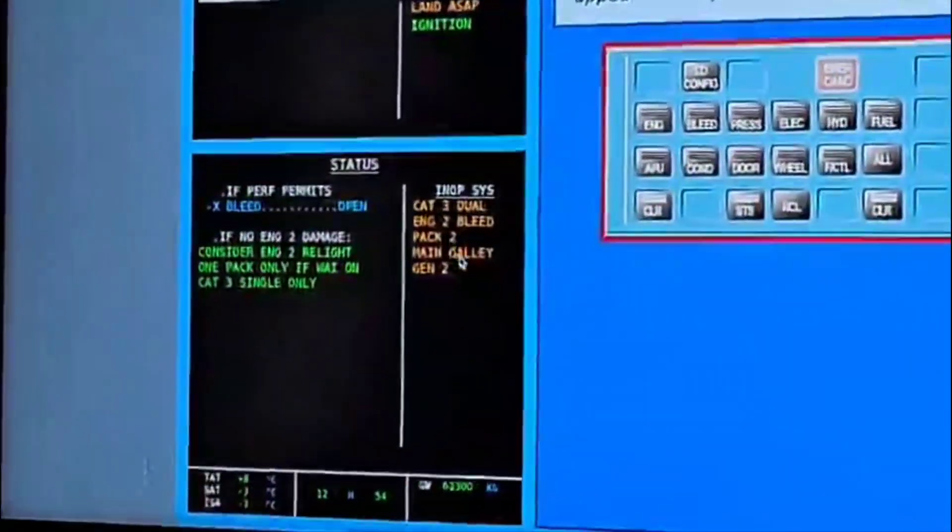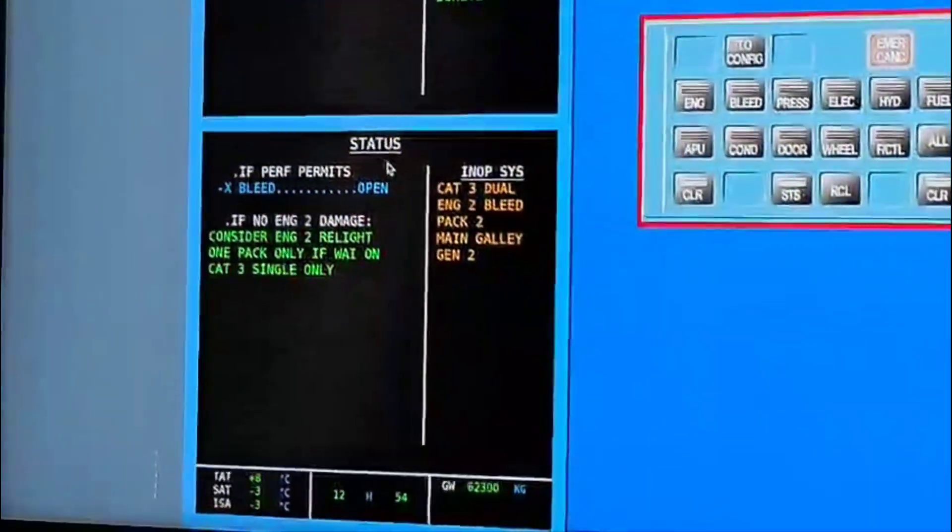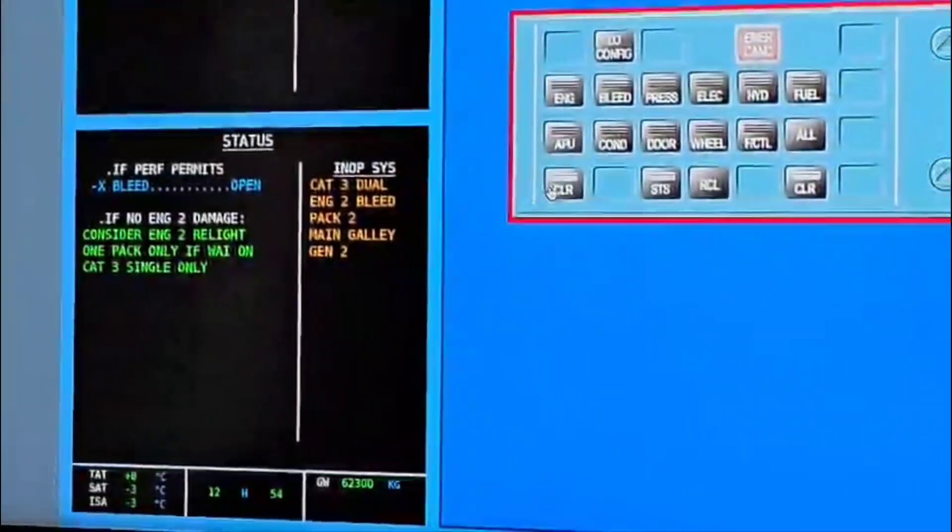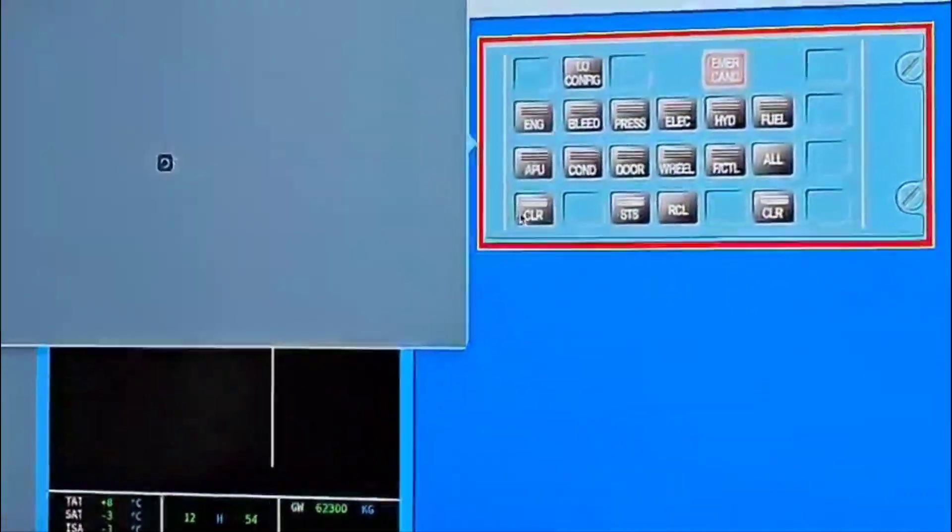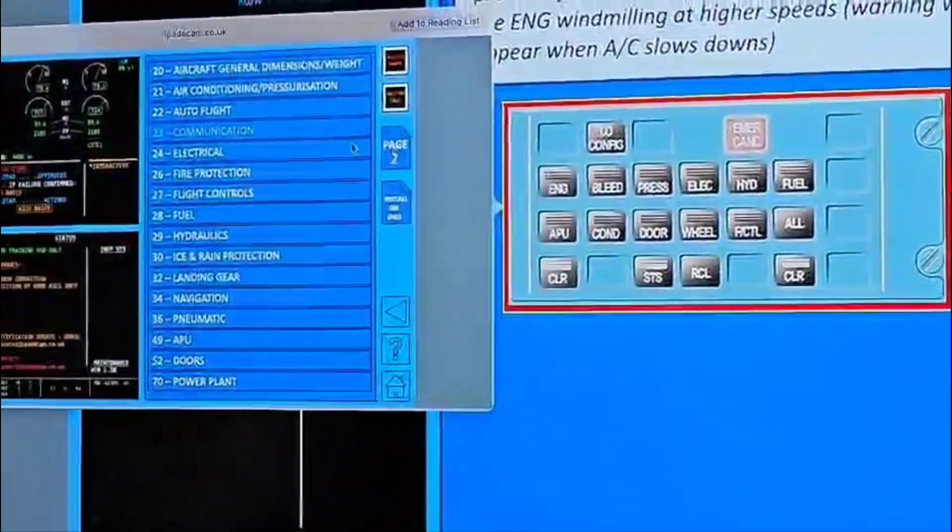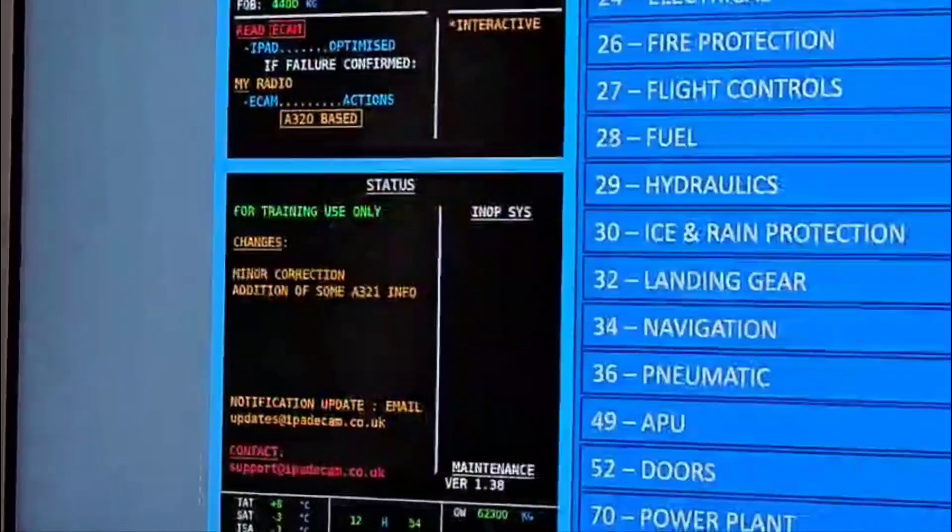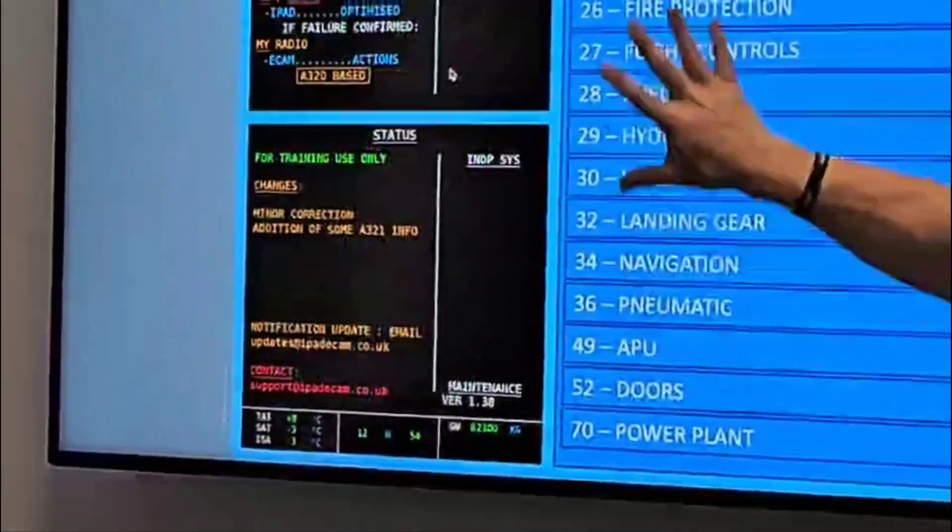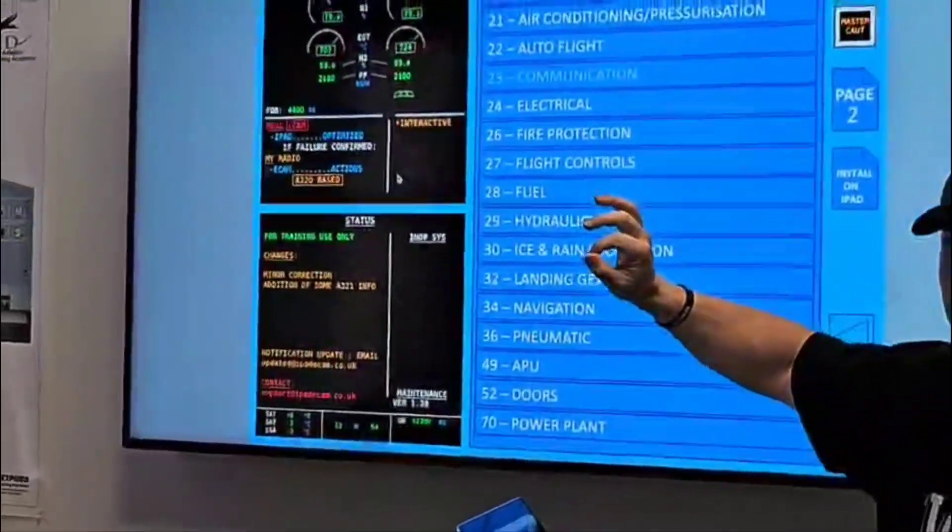CAT3 DUAL engine two bleed, pack two, main galley, generator two. Clear status. And once you clear it the way I just did, it all goes away. ECAM action complete.